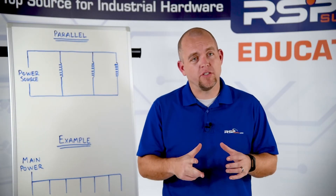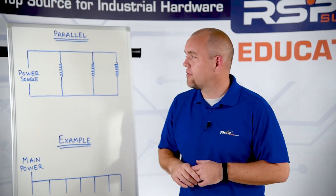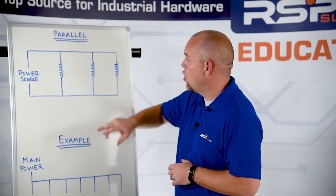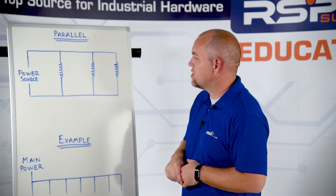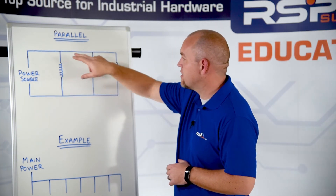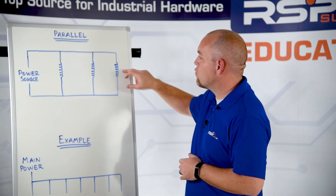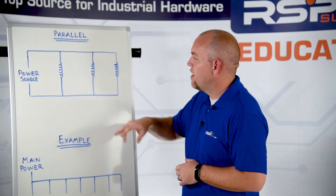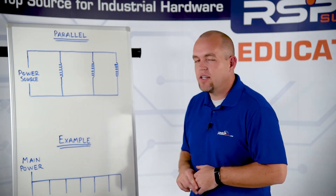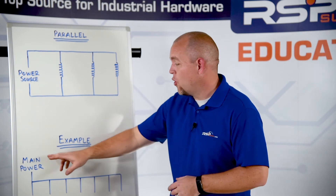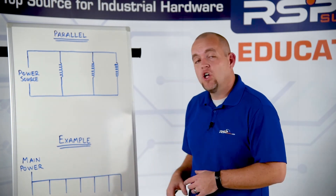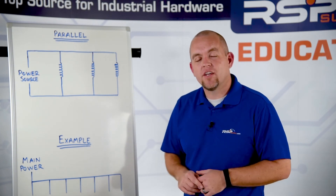Let me show you a few examples of those parallel circuits. Here you can see a very simple parallel circuit. We have our power source with multiple resistors, and you can see that each resistor has its own path for electricity to flow. So if one resistor fails, the others will continue to function properly. Down here you can see the industrial control panel example, where we have main power coming in and we distribute that power in parallel to all the different devices within the panel.